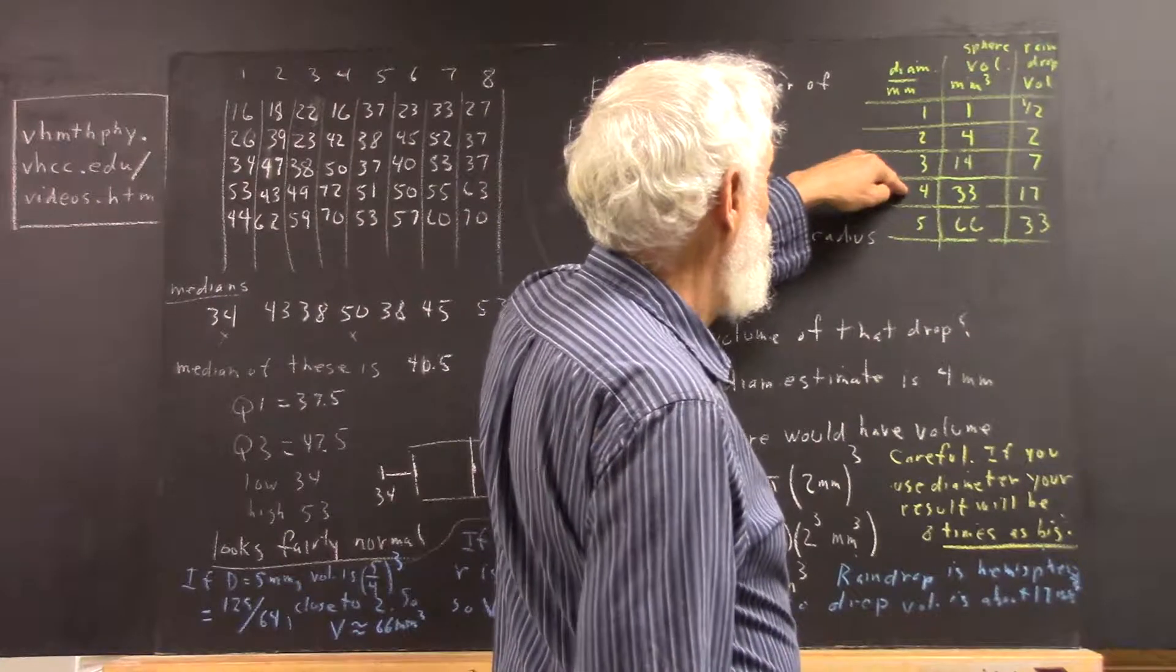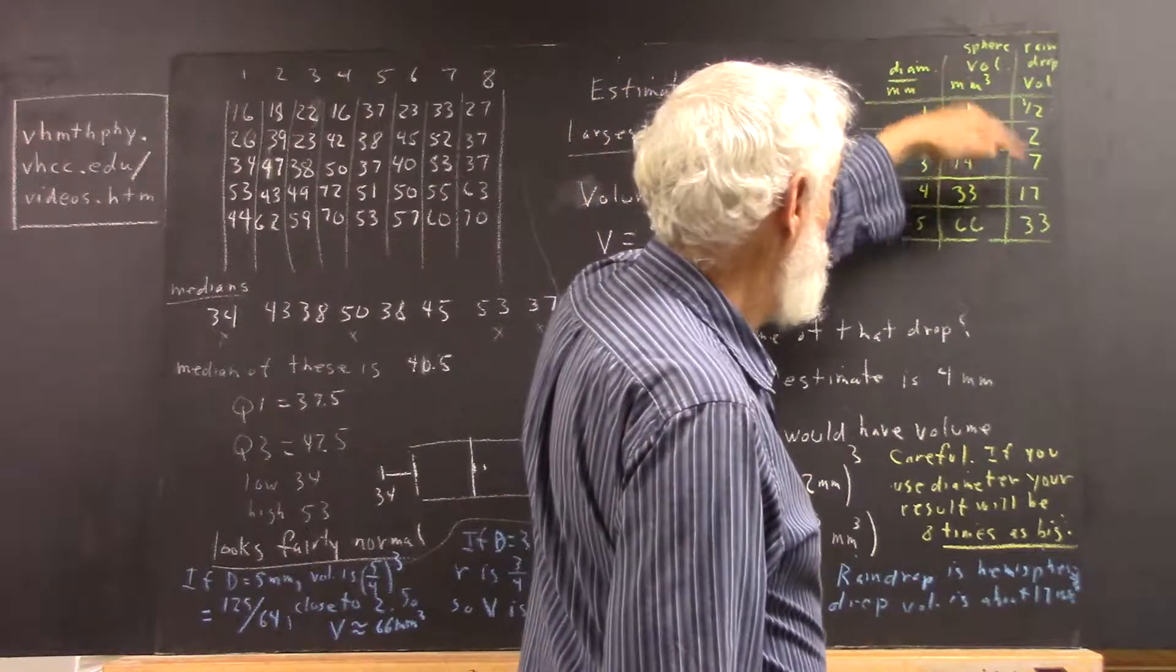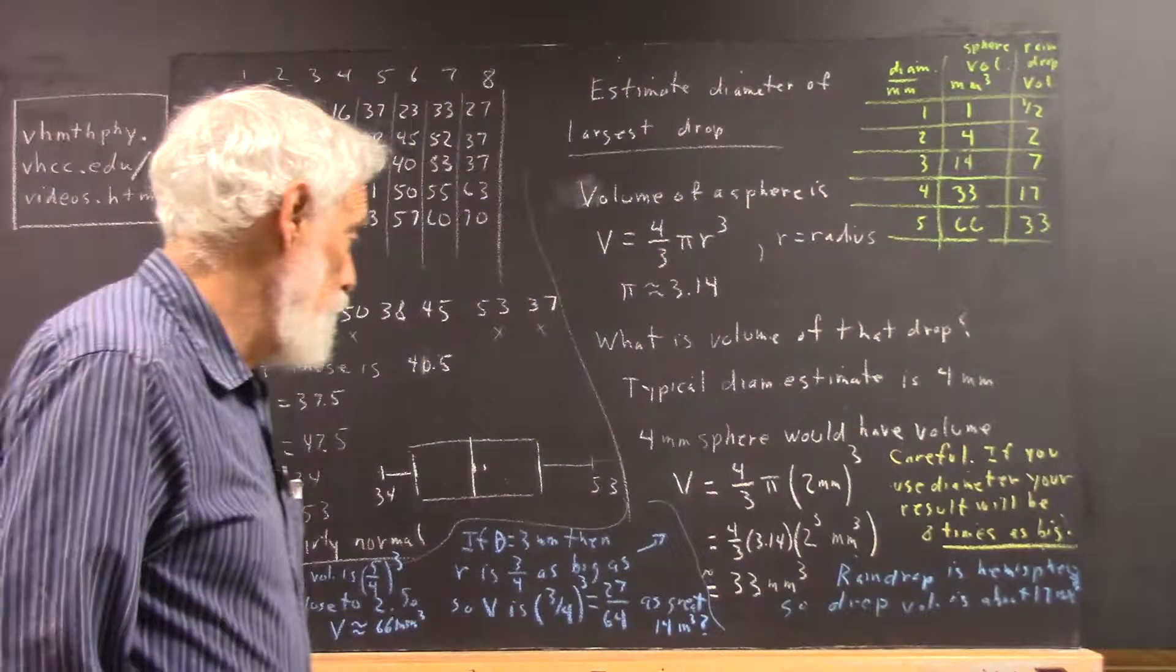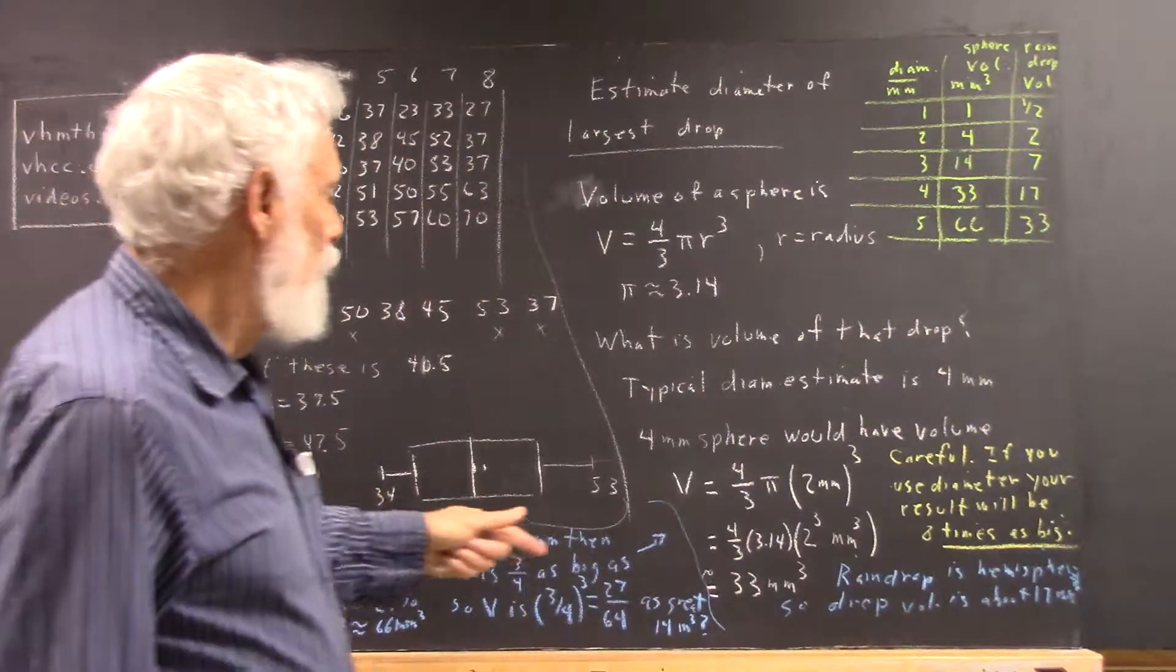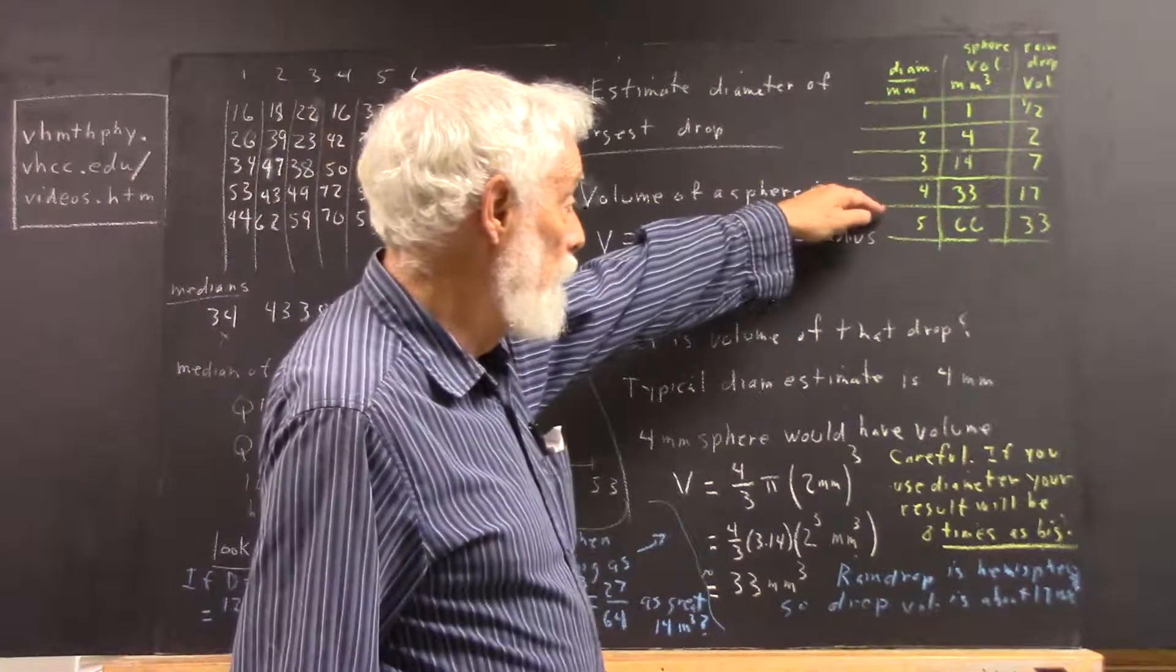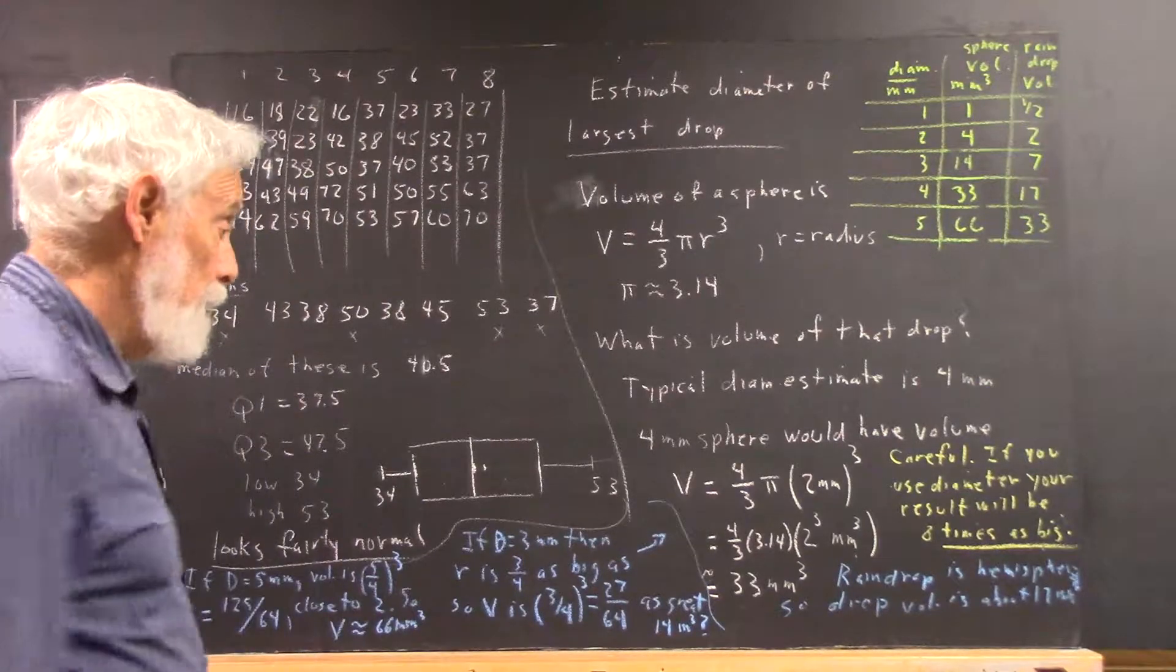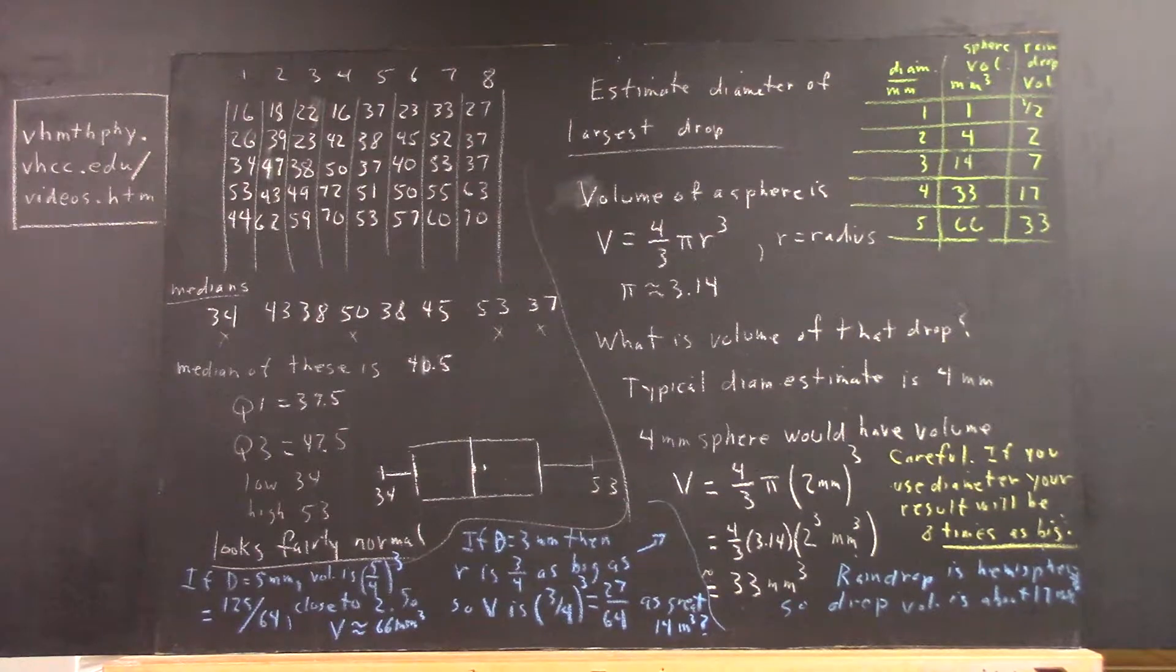The diameter is 4 millimeters. The sphere has a volume of 33 millimeters cubed. The raindrop has half that volume. Then we used this as a basis. Instead of plugging in three, using a three-millimeter diameter or a five-millimeter diameter, I did some proportionality reasoning, which we want to talk about briefly. So we'll do that in the next clip.